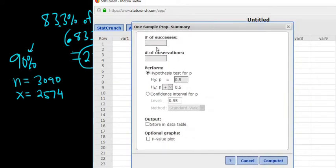So successes, that's 2,574. Observations is 3,090. Hypothesis test, that's something else. We're doing confidence intervals for p. p is the population proportion. In this case, we have to change the 95 to 90. So everything looks okay. Click Compute.